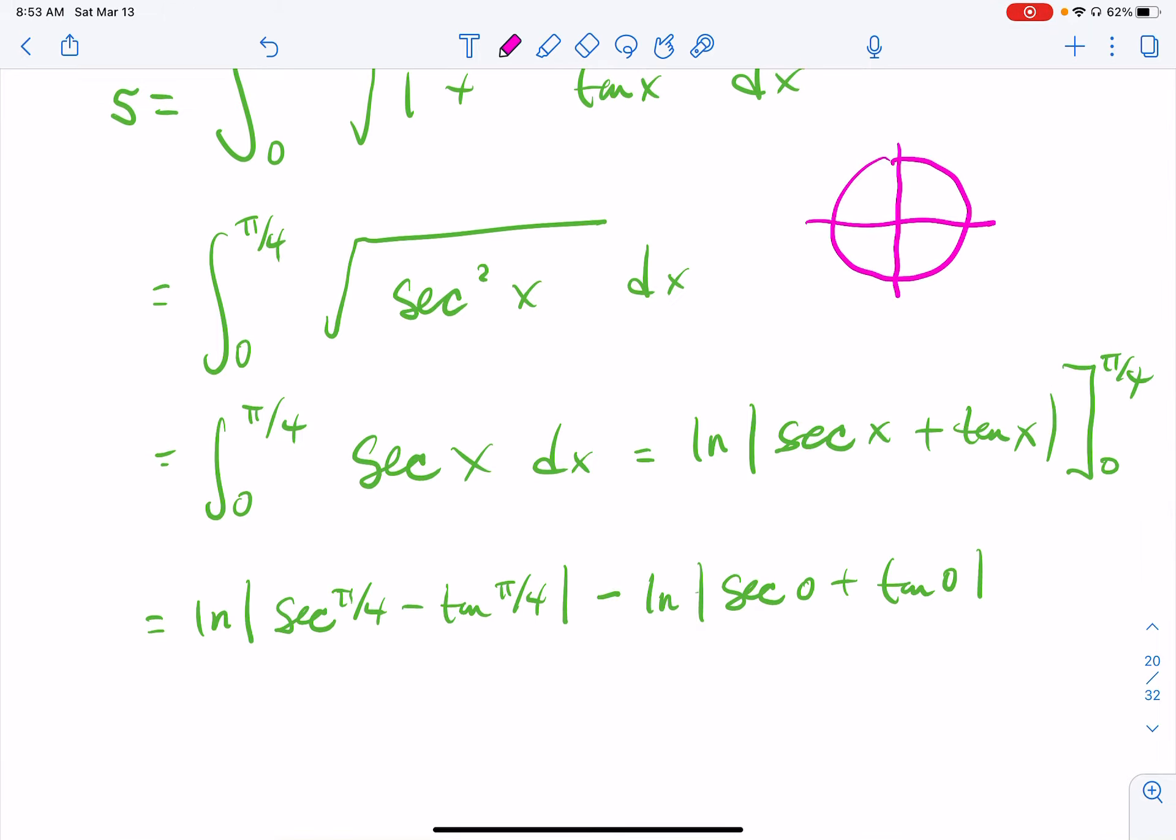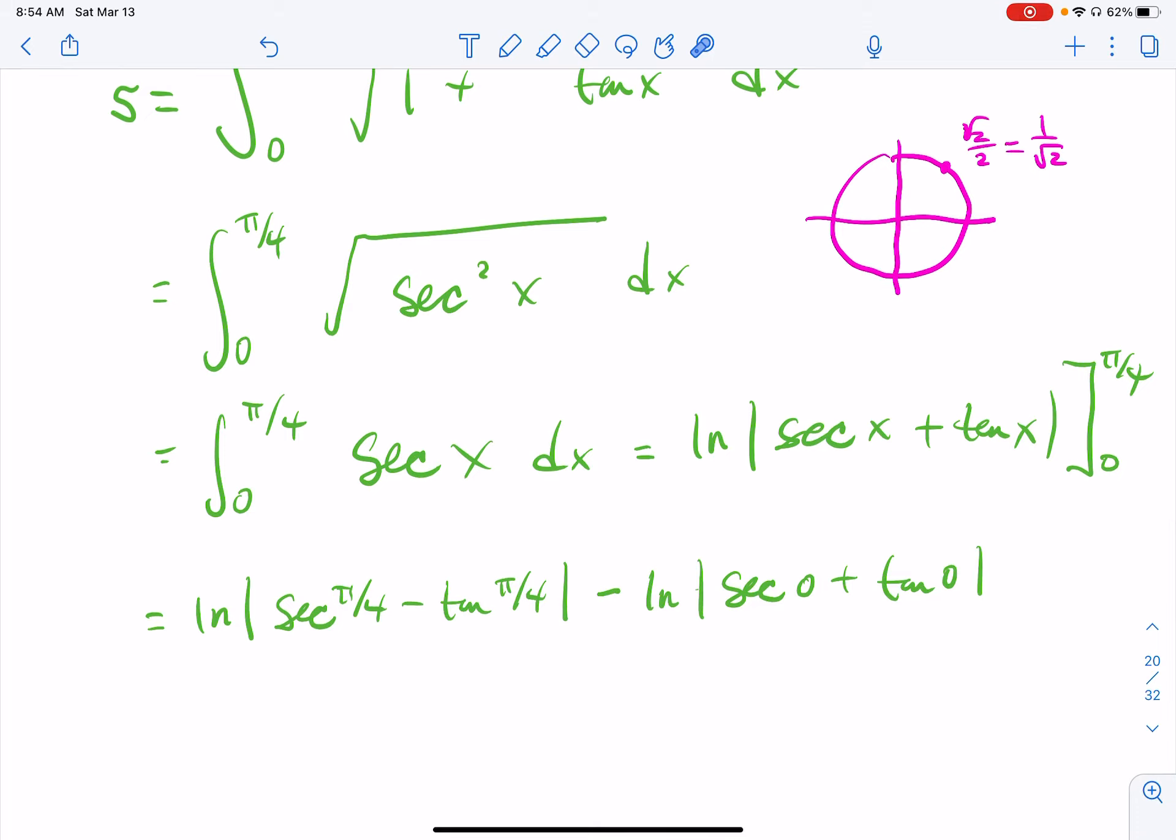So pi over four is what we're working with. Secant is one over cosine. And this is square root of two over two, but that came from one over the square root of two. And secant is just the reciprocal of that, which is the square root of two. So this is square root of two.